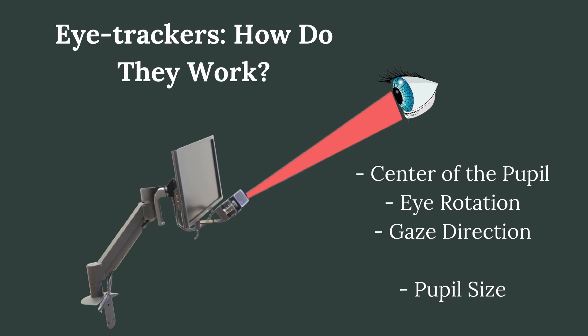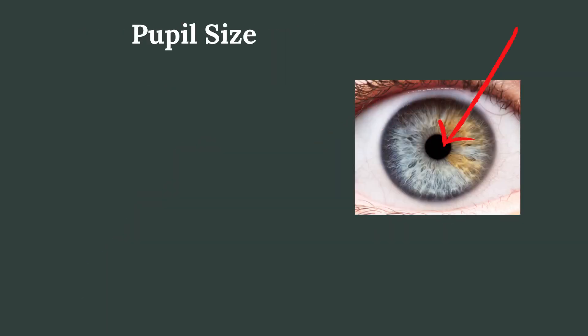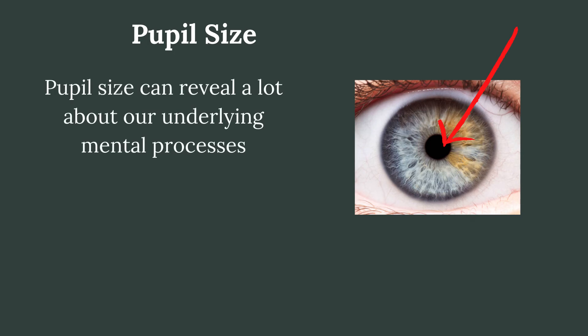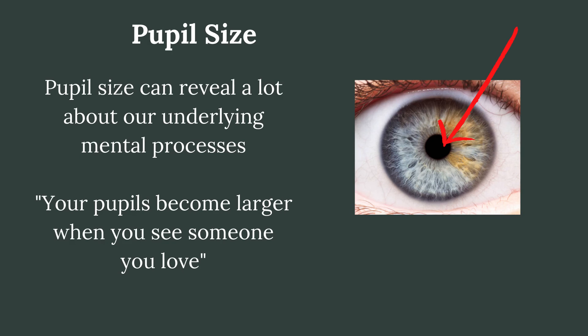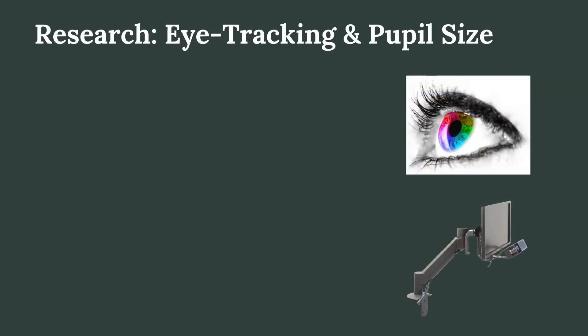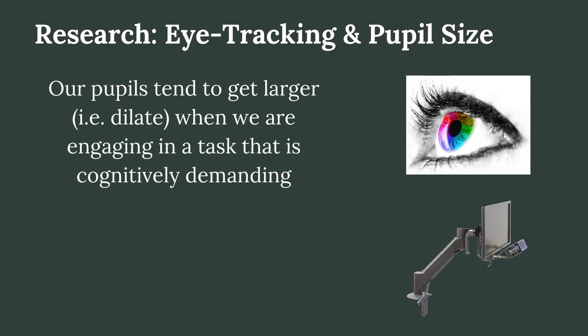A question that comes up then is, well, why would you measure pupil size? The answer is that pupil size can be of interest. Just like eye movements, pupil size can reveal a lot about our underlying mental processes. I'm sure some of you have heard the expression that our pupils become bigger when we see someone we love. Although this may be a bit simplified, pupils can indeed reveal a lot about what's going on in our heads. For instance, research has shown that our pupils tend to become slightly bigger — in other words they tend to dilate — when we are engaging in a task that is cognitively demanding.